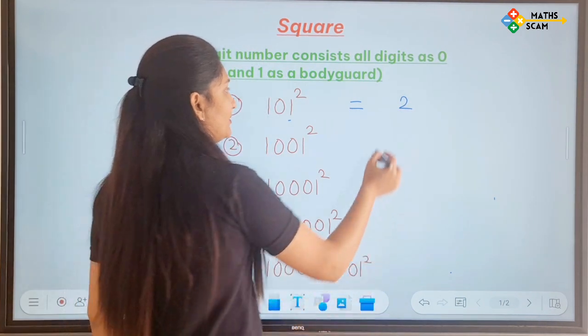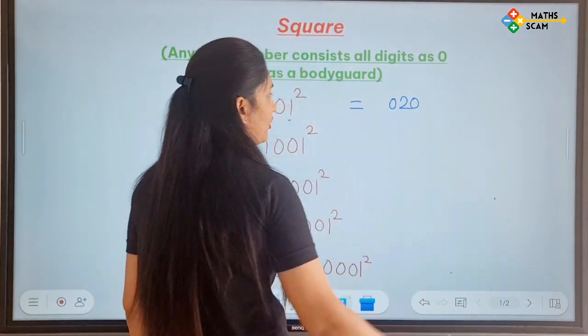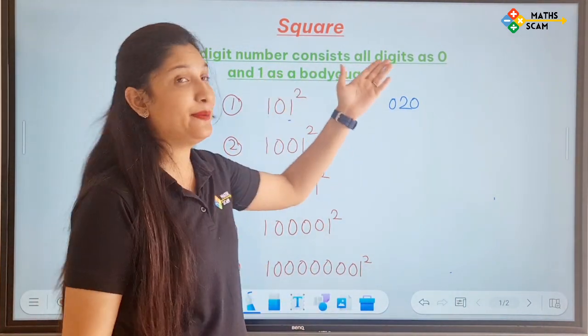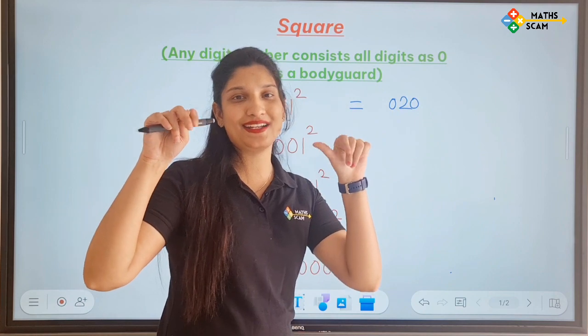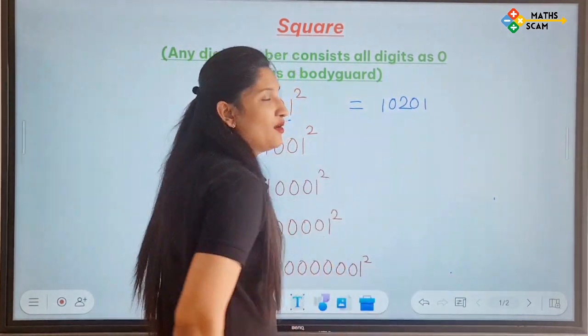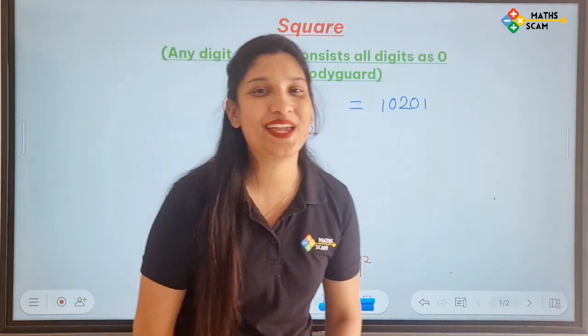Now we have to write down that 1 0 before and after of 2. So now the type itself is 1 as a bodyguard. So here answer it will come 1 as a bodyguard. Matlab first and last digit will be 1.